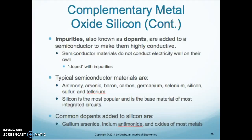Semiconductor materials do not conduct electricity well on their own, so they're doped with impurities to make them more efficient. Typical semiconductor materials are listed below, and some of those you'll recognize from prior use. Silicon is the most popular and is the base material for most integrated circuits.